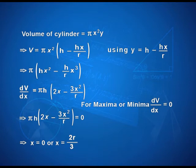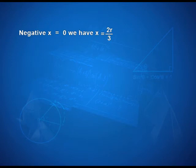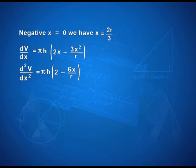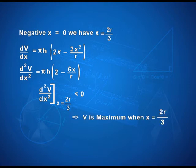In this case, we get 2 values of x: 0 and 2r/3. We reject 0. Why? If x is 0 that means there will be no cylinder. So, we focus only on x equal to 2r/3. Is this a point that gives us maximum volume? Can only be verified through the second derivative test. I find the second derivative and when I put x equal to 2r/3, we get the second derivative negative, which confirms that V is maximum when x is 2r/3.